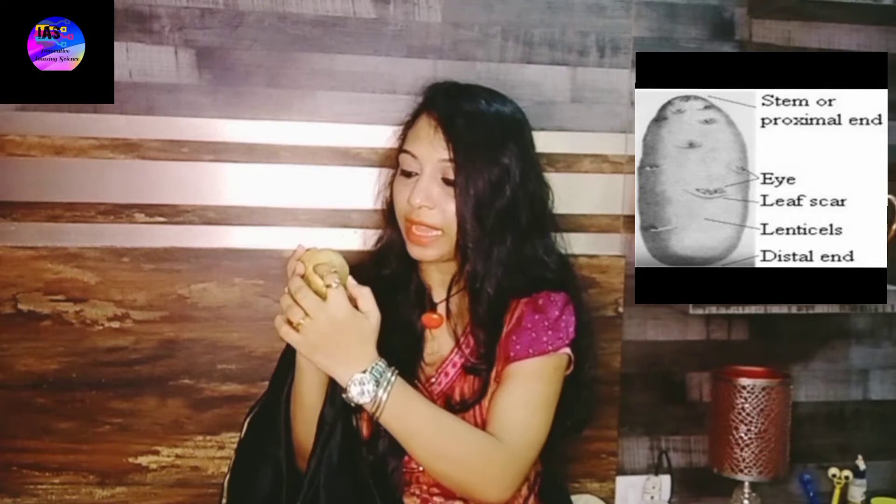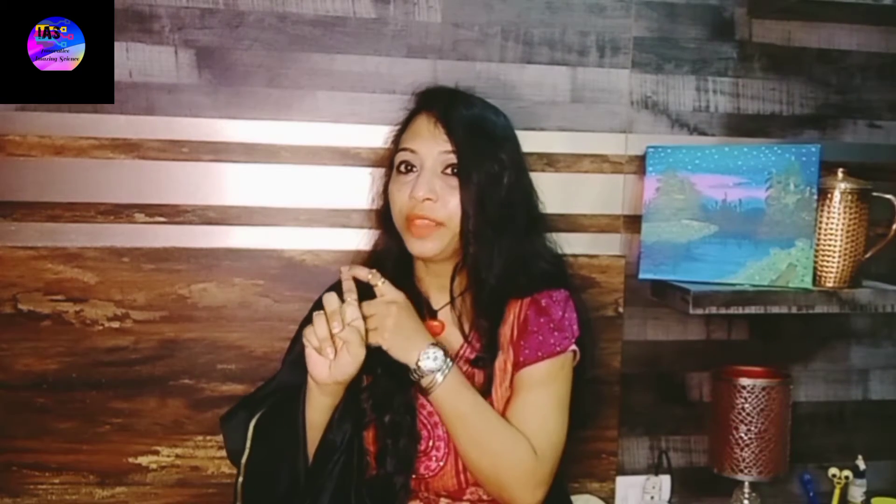If you observe this potato carefully, you can see it has eyes, and each is having a leaf scar on top. The main purposes of the tuber are saving food and reproduction. Potatoes are artificially produced by tuber pieces called seed pieces. A tuber is cut into pieces, each with one or more eyes, and these pieces are planted — each produces a new plant from one of its eyes. Sometimes we can simply take the whole tuber and plant it, as it can also give rise to a new plant provided it has eyes on it.